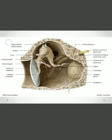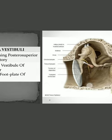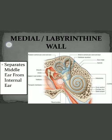A similar window in the posterior-inferior portion is the round window, known as the fenestra cochleae. It is closed by a secondary tympanic membrane. It is called cochleae because it lies opposite to the scala tympani of the cochlea. In this figure, inferior to the promontory is this round window closed by the secondary tympanic membrane — fenestra cochleae.